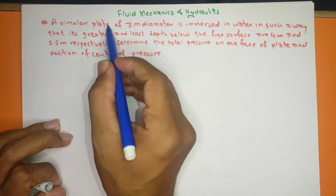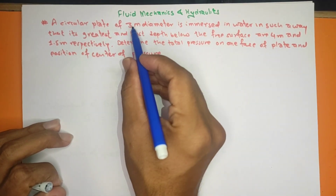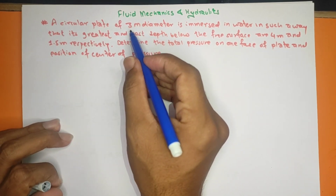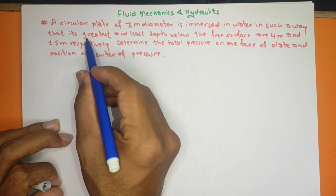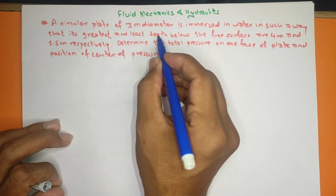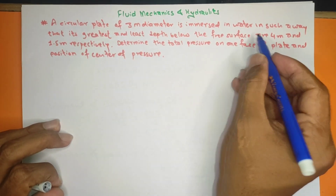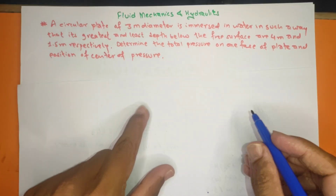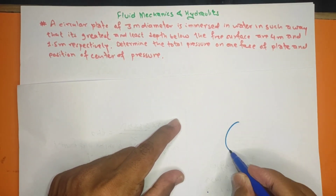The plate is a circular plate with 3 meter diameter. The greatest vertical depth is 4 meter and the least depth is 1.5 meter. The circular plate is inclined — it is a vertical plate set at an angle.